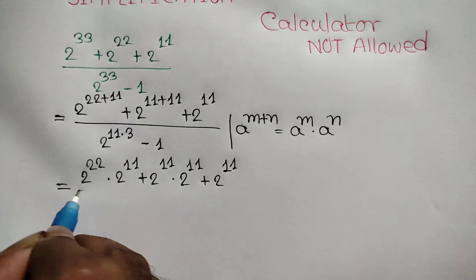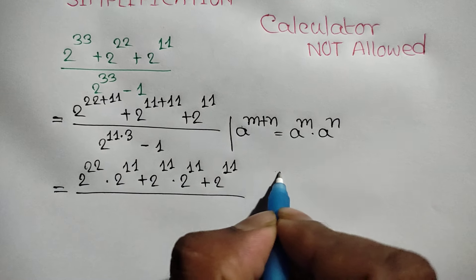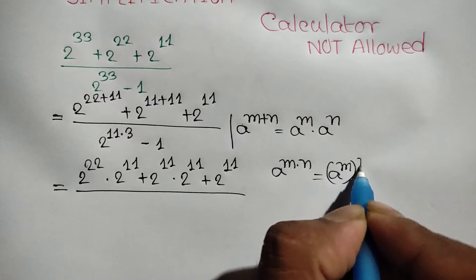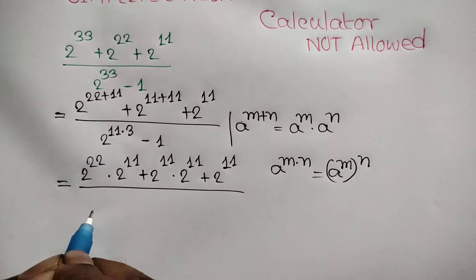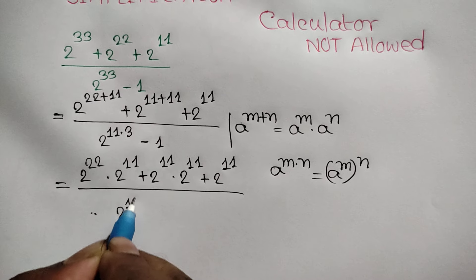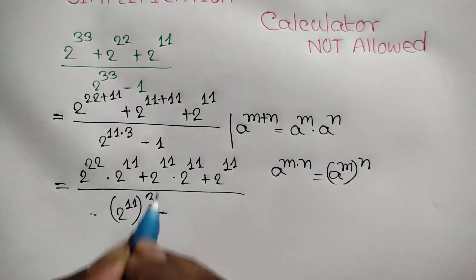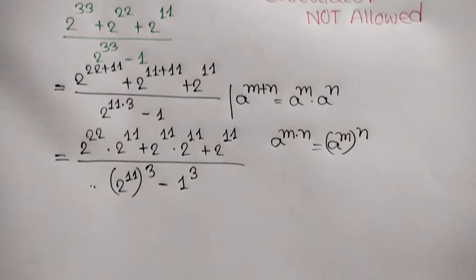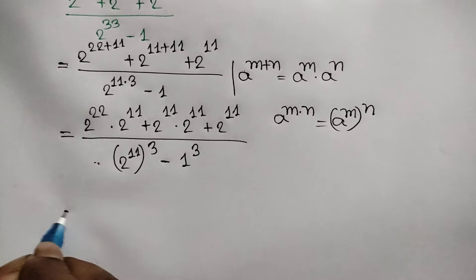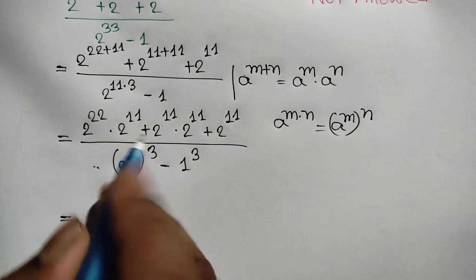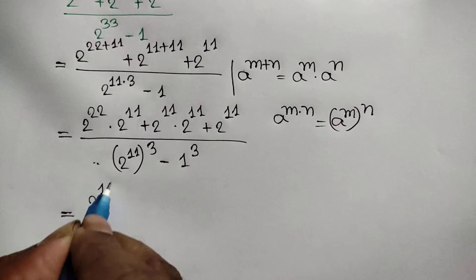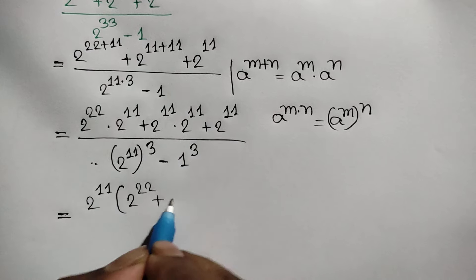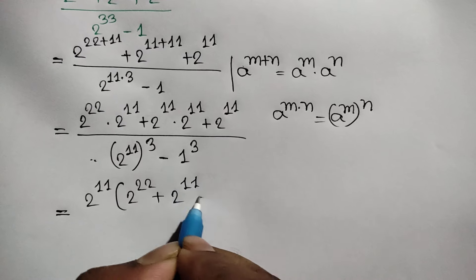We also know that a to the power m times n equals a to the power m, whole to the power n. Applying this rule, we can factor out 2 to the power 11, giving us 2 to the power 11 times the quantity: 2 to the power 22 plus 2 to the power 11 plus 1.